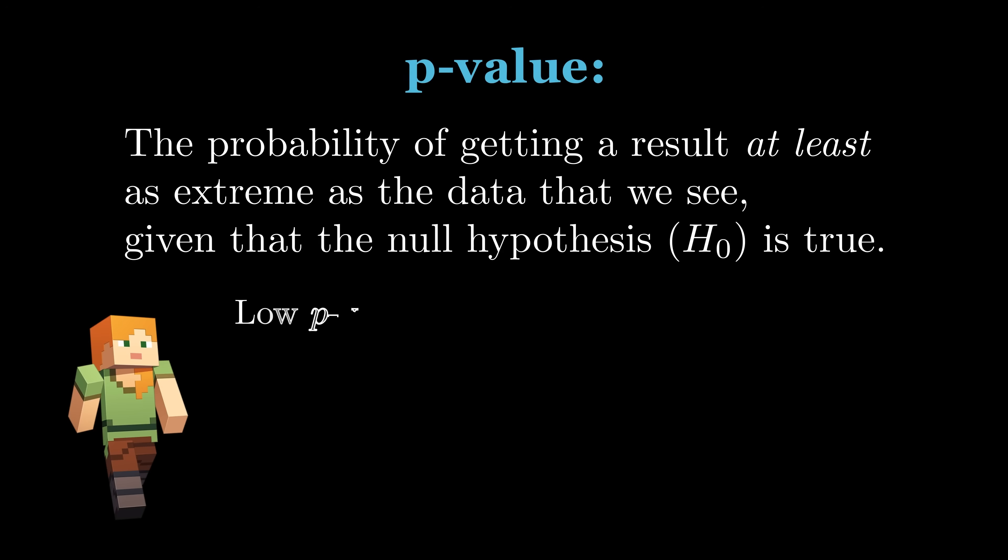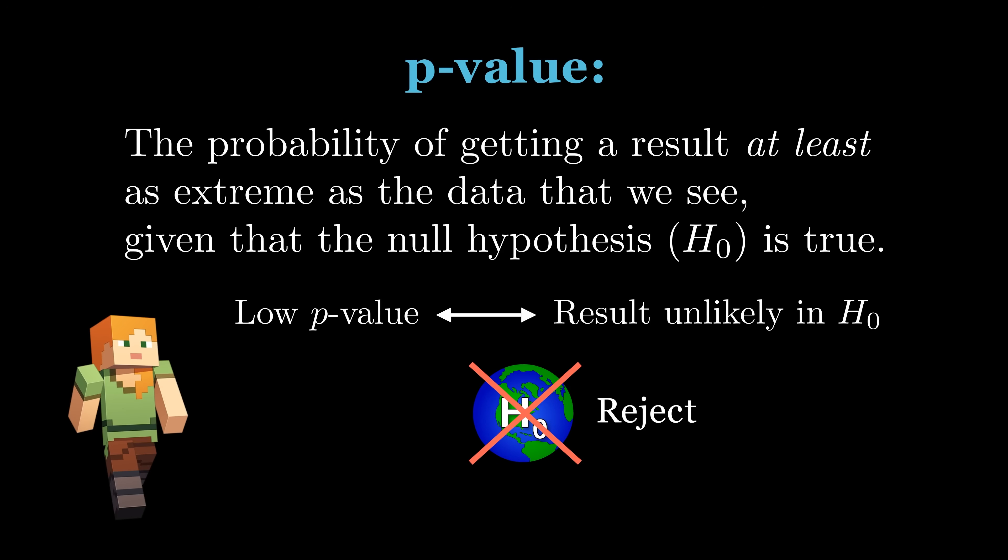But how low does our p-value need to be for us to conclude that they were cheating? Returning to our definition, notice how a low p-value is saying that the null world is unlikely to generate the result that we observed. This suggests to us that we likely don't live in the null world, or in the lingo of statistics, we should reject the null hypothesis.